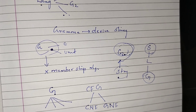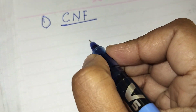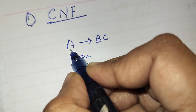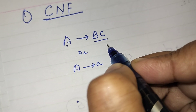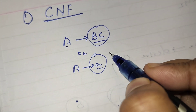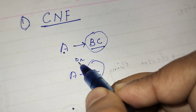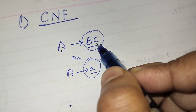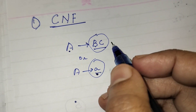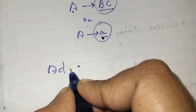What is Chomsky Normal Form? If all productions are of the form A → BC or A → a, where A, B, C are non-terminals and a is a terminal, then such productions are in Chomsky Normal Form. There is a single non-terminal on the left-hand side, and on the right-hand side either two non-terminals or a single terminal. Every representation of a grammar has some advantages, so what are the advantages of using Chomsky Normal Form?